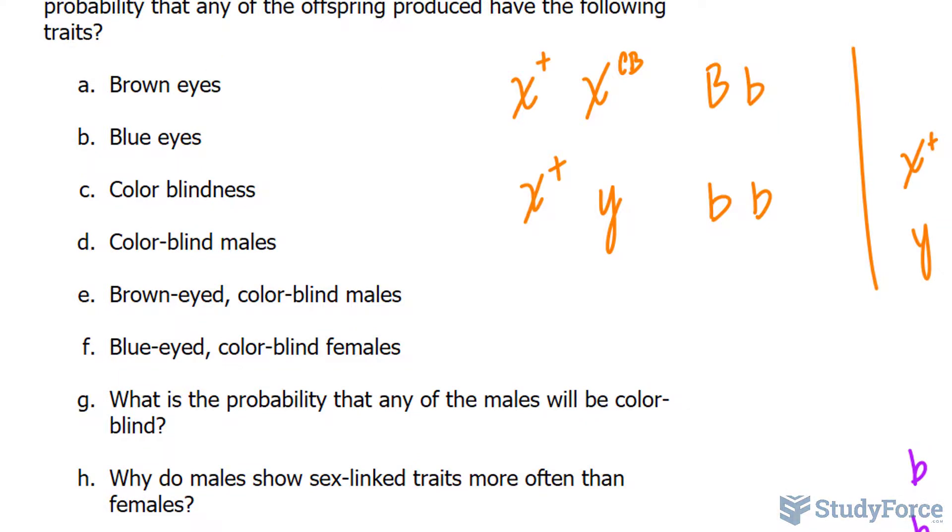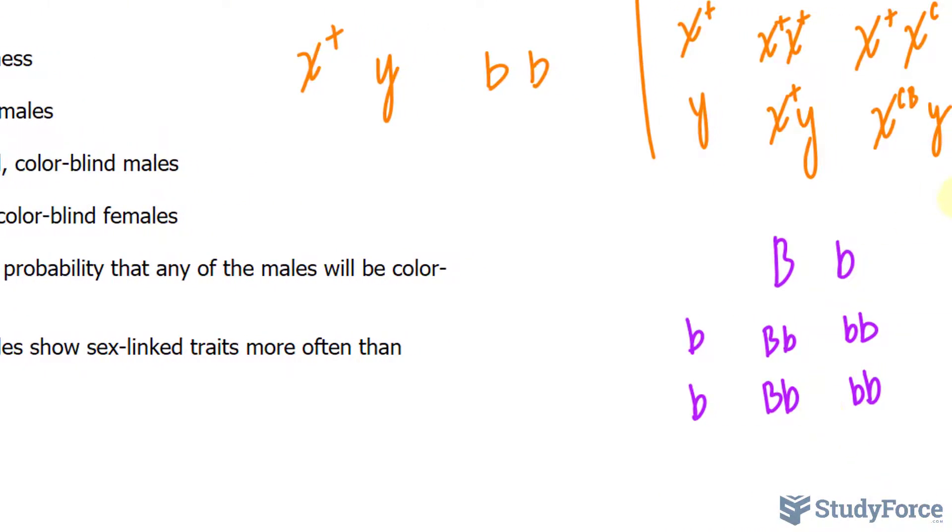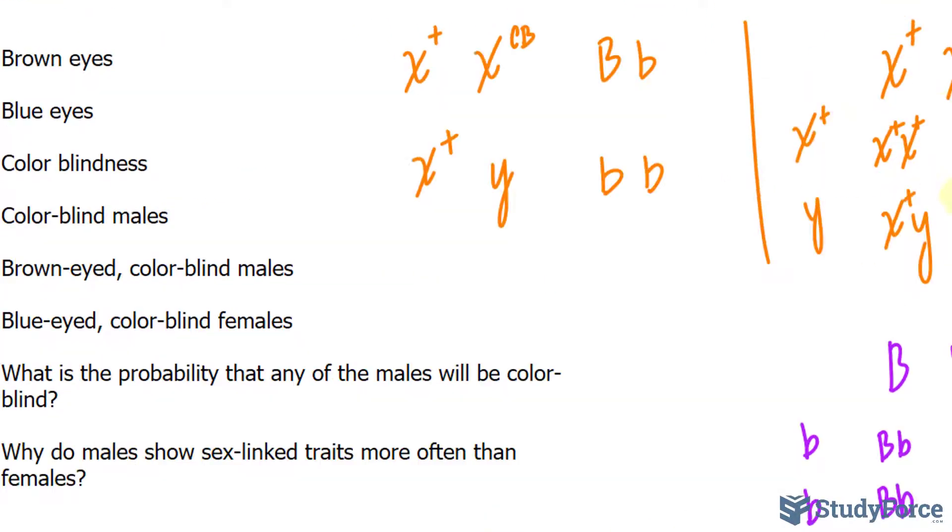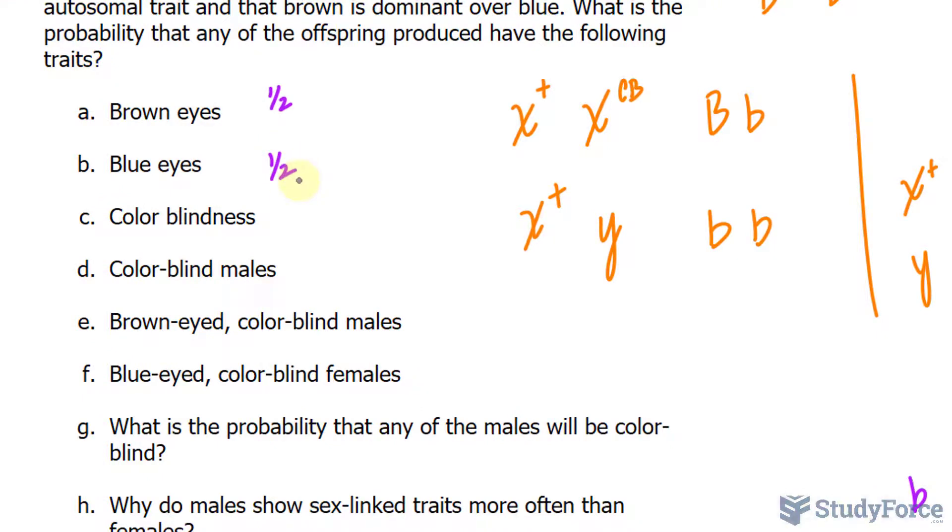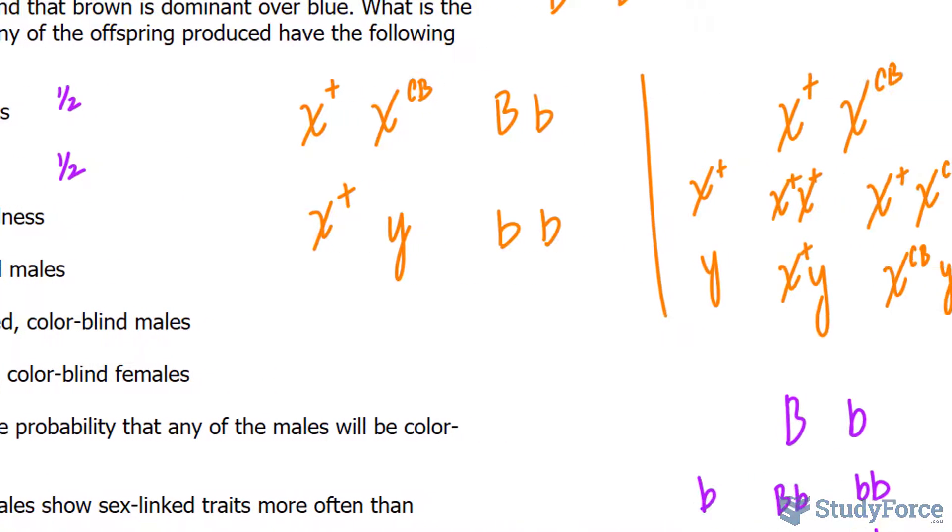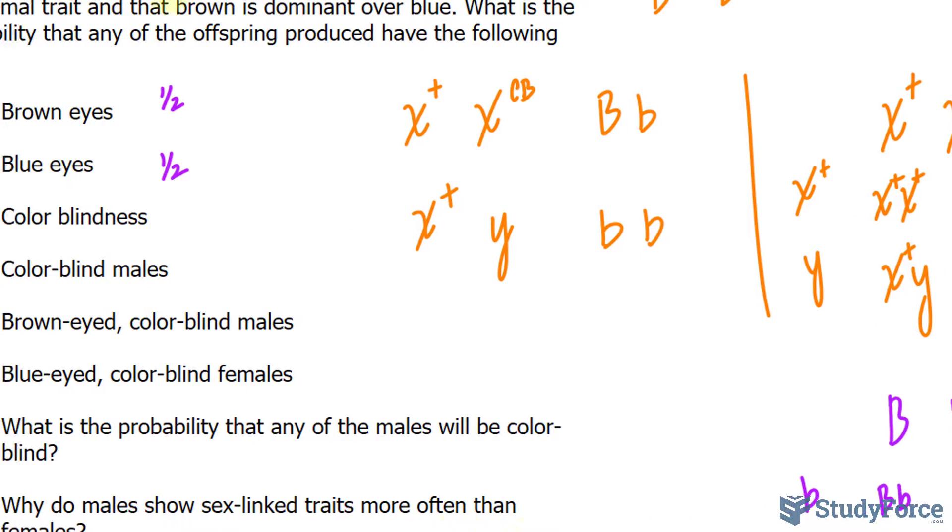To answer question A, the probability of having brown eyes. The probability is two out of the four here, which reduces down to half. Blue eyes is also half. Colorblindness—the only person that would have colorblindness is the person with this genotype, and that's a one in four chance.